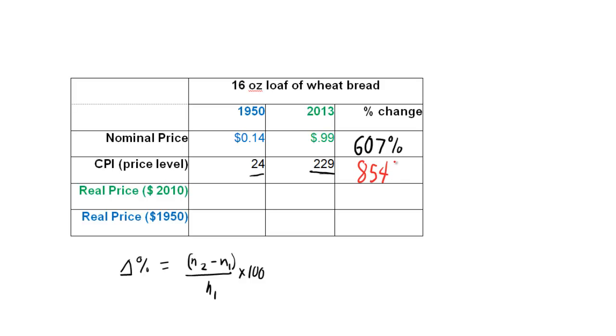Before we even solve for real prices, we can realize that CPI went up more than nominal price did, meaning overall prices inflated more than the price of bread, which means what? Overall prices going up 800%, and bread's only going up 600%. Relative to the whole, relative to all goods, bread is lower. The real price of bread has gone down, and that's what we're about to prove when we calculate it out.